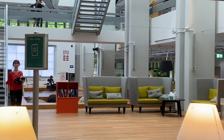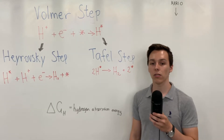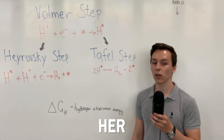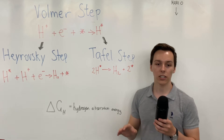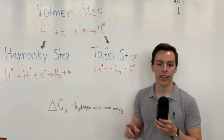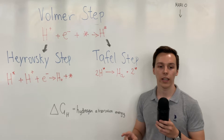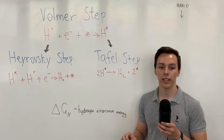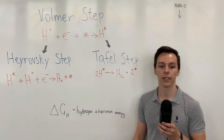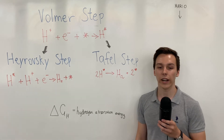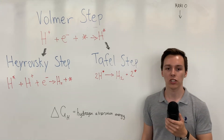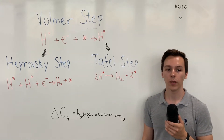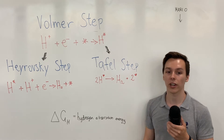Now let's analyze the reaction even more. The hydrogen evolution reaction, also known as HER, can occur through either the Volmer-Heyrovsky step or the Volmer-Tafel mechanism. In the reaction formulas, the asterisk indicates an empty active site on the catalyst surface, and H* indicates a hydrogen atom bound to the active site. In both mechanisms, the rate of the overall reaction is highly influenced by the hydrogen adsorption energy. When the hydrogen binds to the surface too weakly, the adsorption — or the Volmer step — will limit the overall reaction rate.